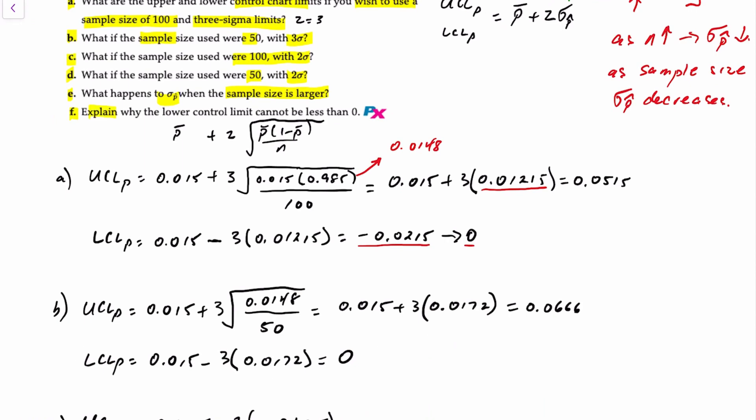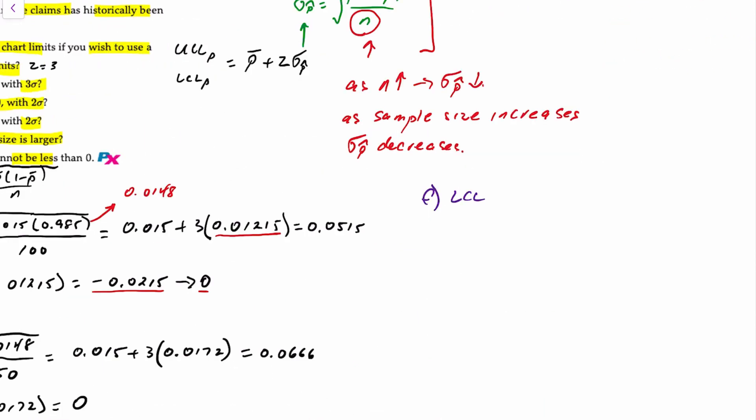And finally, for requirement F: explain why the lower control limit cannot be less than 0. The lower control limit can be 0, but never negative, because it's impossible to have less than 0 defects.